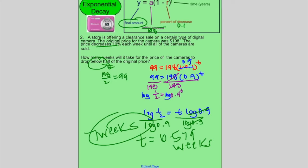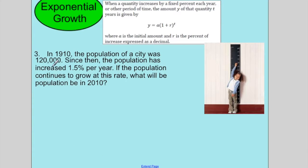Let's move on to example 3. Example 3 is an example of increasing, so it's exponential growth. The biggest thing is that instead of subtracting, now you would add the rate. In 1910, the population of a city was 120,000. So that's how much you start with. So that is your a.